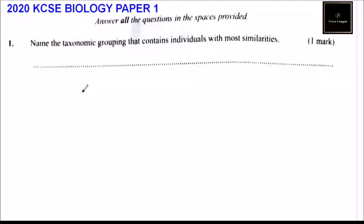This is question number one, 2020 KCSE Biology Paper 1. This section — answer all the questions in the spaces provided. So the first question is: name the taxonomic grouping that contains individuals with the most similarities.